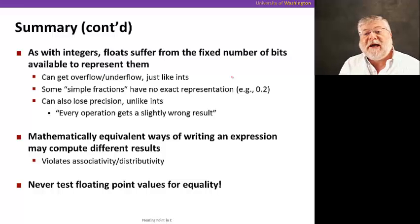Finally, we always have to remember that all these representations suffer from the problem that there's a fixed number of bits. And that means we can get overflow or underflow. In floating point, we also have to consider the fact that even simple fractions like point two do not have an exact representation. In fact, it's a repeating representation that we have to truncate at some point and round. Okay? So we can lose precision.